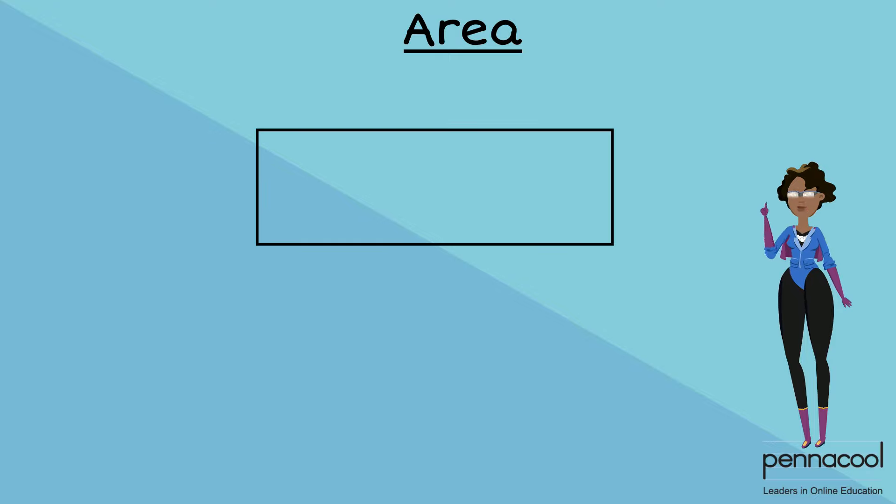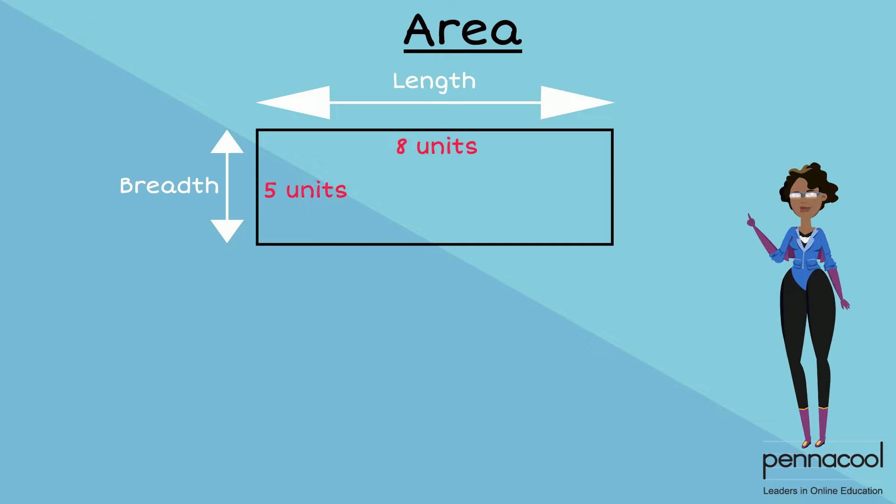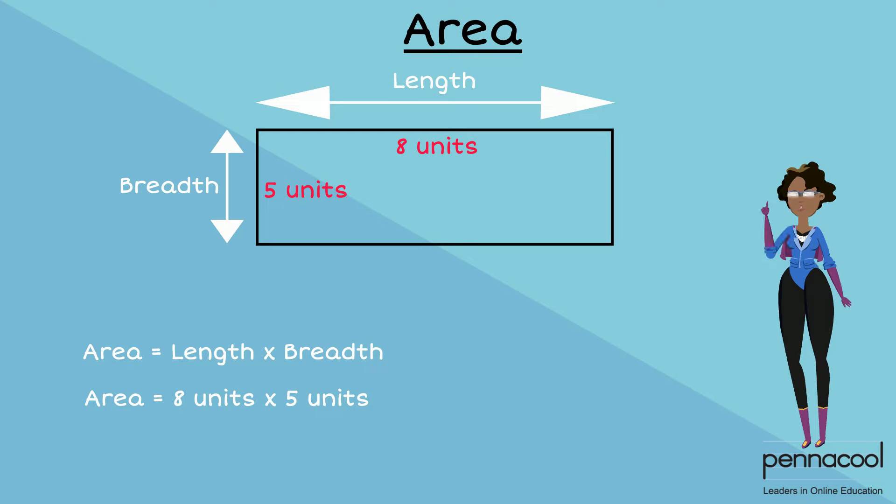For rectangles, we find the area by multiplying the length by its breadth. For instance, if we have a rectangle that is 8 units long and 5 units wide, the area of the rectangle will be found by multiplying 8 units by 5 units. This gives us an area of 40 units squared.